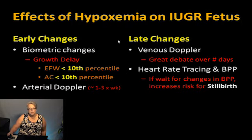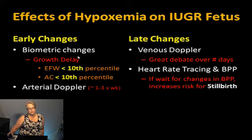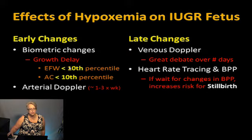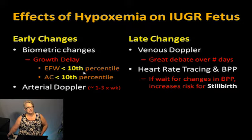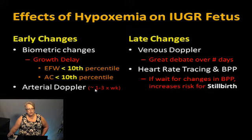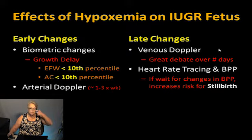We're trying to ensure babies at risk for hypoxia are delivered before adverse outcome. Early changes in growth-delayed babies include biometry falling below the 10th percentile — EFW or AC less than the 10th percentile. In our group, even if EFW is at the 12th or 13th percentile, if the AC is less than the 10th percentile, we start Doppler evaluation, usually once to three times a week depending on what else is going on.